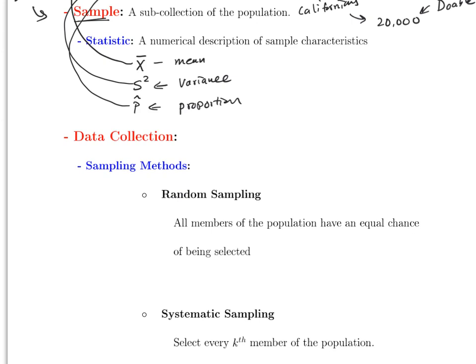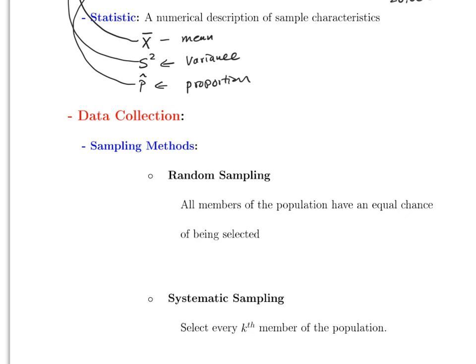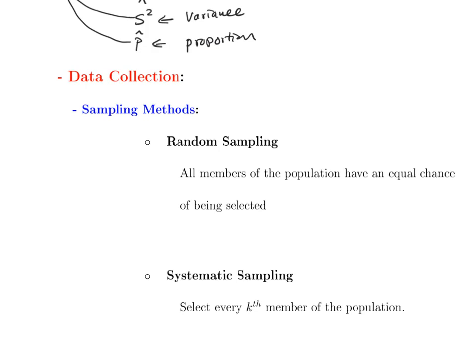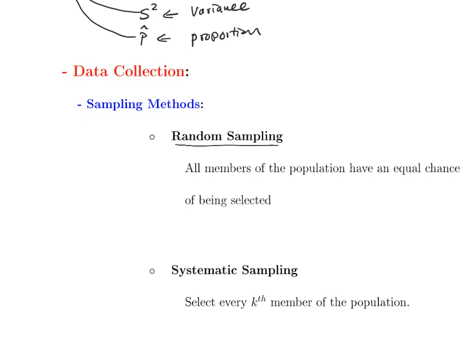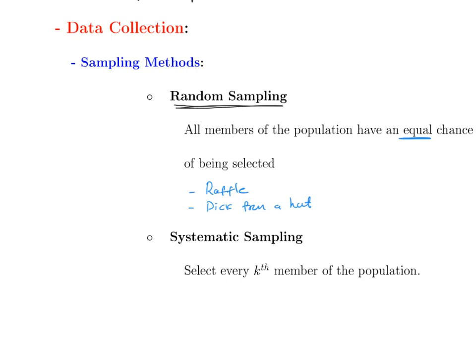There are several methods to collect data. We're not really going to collect data in the class, but it's good to know the different methods. The most basic one is random sampling, which says all members of the population have an equal chance of being selected. One basic way to accomplish this is through a raffle or picking from a hat. Every member should have an equal chance of being selected. The next method is systematic sampling, which means selecting every k-th member of a population.